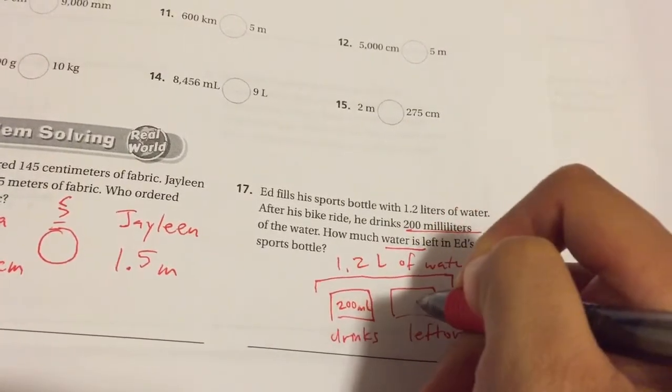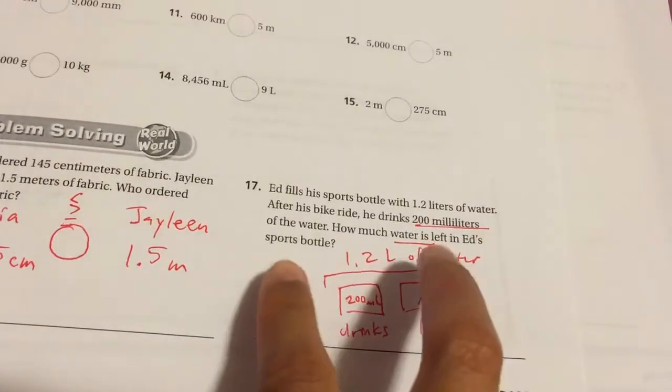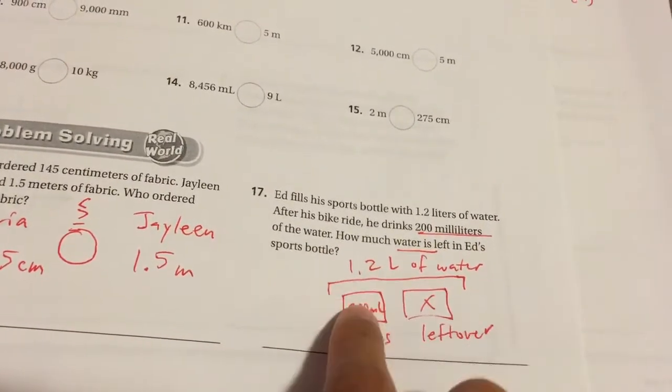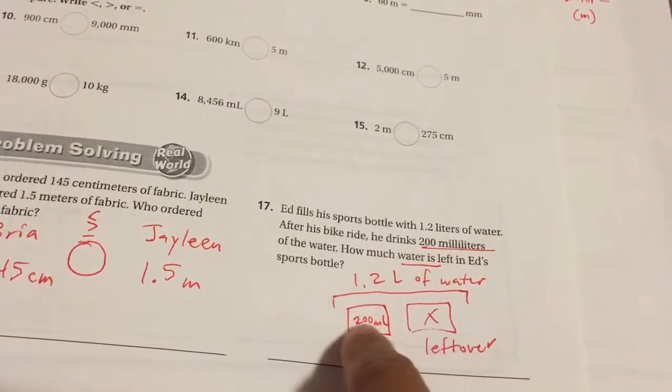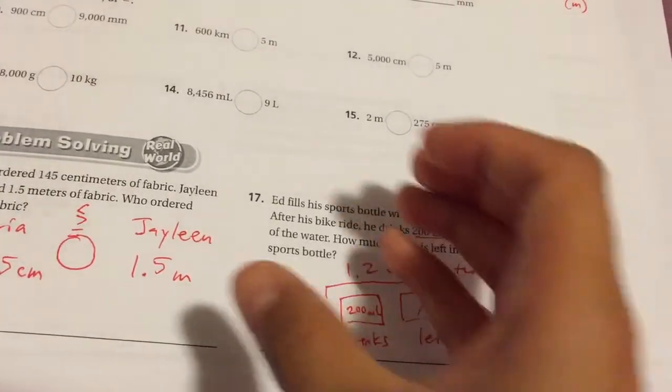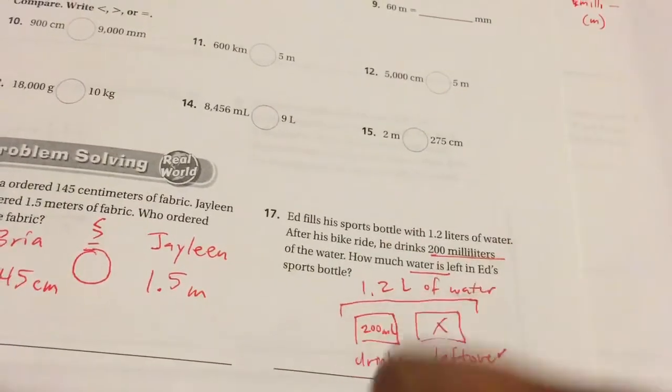How much do you have left over? You don't know. And normally, what we would do is, because the number is getting smaller and it's not repeating, we would subtract the total by the part that he drank. We took away some water. He filled up the water bottle, he took some away. How much is left? We would subtract because it's taking away.